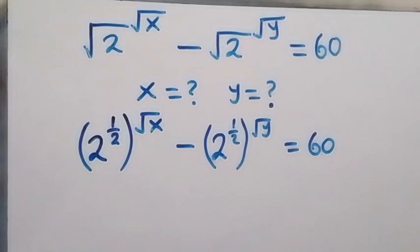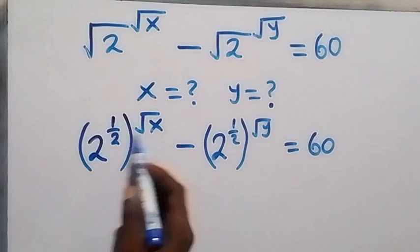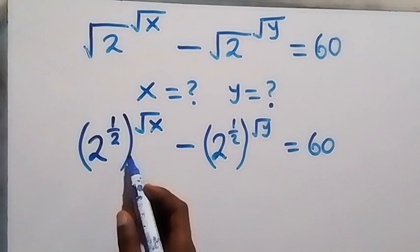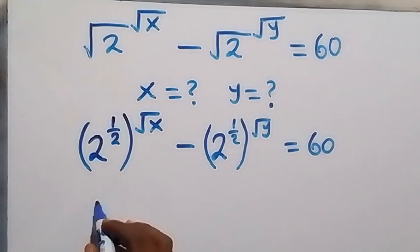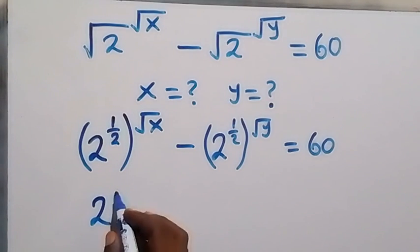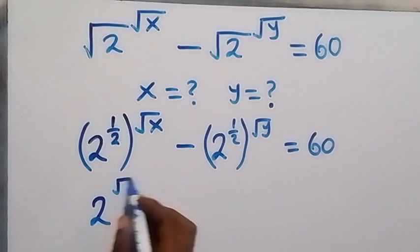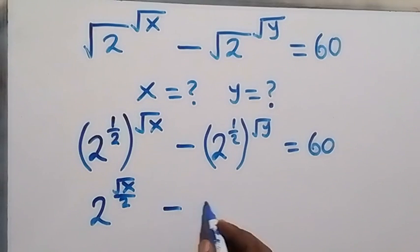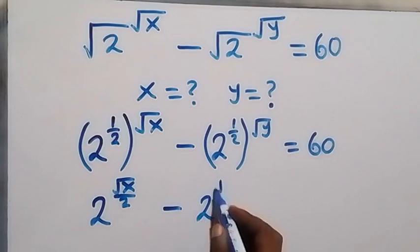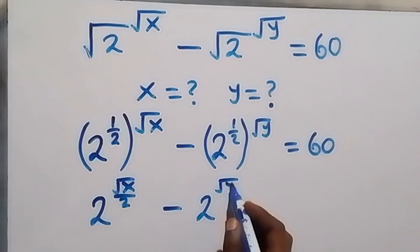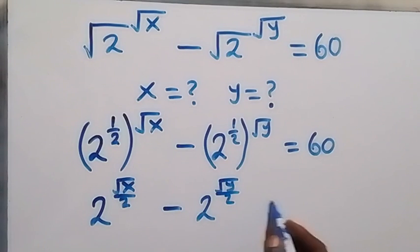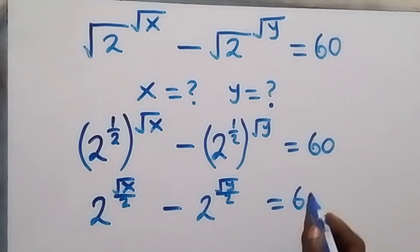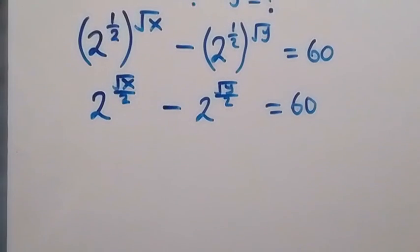From the law of indices, this power will multiply, and we can write this as 2 raised to power √x over 2, then minus 2 raised to power √y over 2, which is equal to 60.